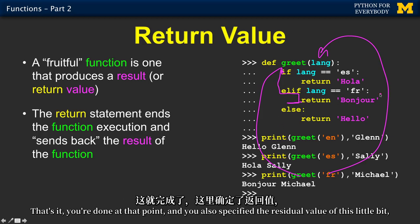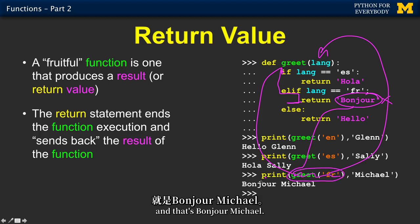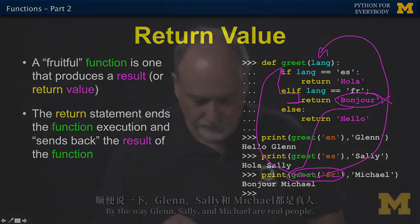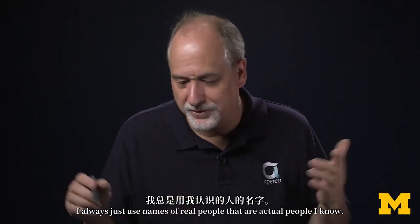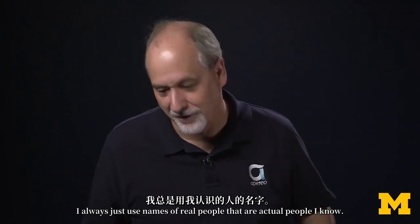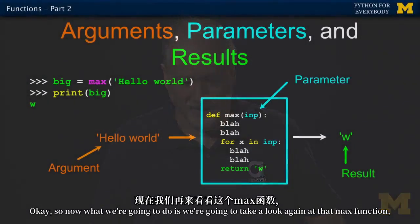And you also specified the residual value of this little bit. And that's bonjour Michael. By the way Glenn, Sally, and Michael are real people. I always just use names of real people that are actual people I know.